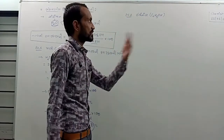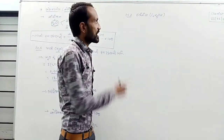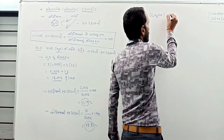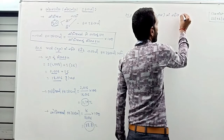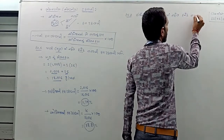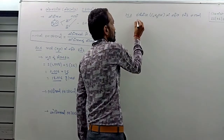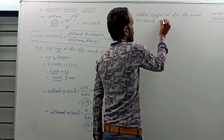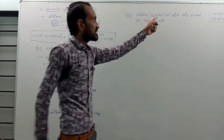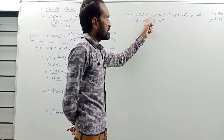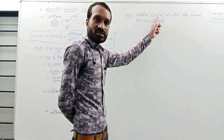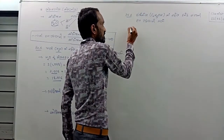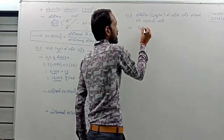The ethanol formula is C2H5OH. Here we have C2H5OH. In ethanol we have carbon, hydrogen, and oxygen, so we will calculate the molar mass: C2H5OH.